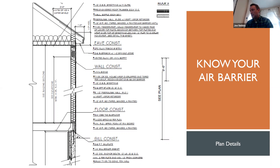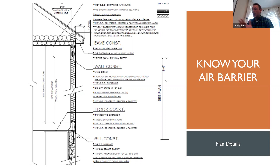You need to know where your air barrier is in order to effectively implement it in the field. It's important that the details are on the plans. If your air barrier is building paper on the exterior, that needs to be detailed and there are certain details that have to happen. If your air barrier is using the drywall on the interior, your air sealing details are going to look a little bit different. If you can't track where that air barrier goes, you're going to miss something. That's an important part of planning a house that has to comply with the IECC.